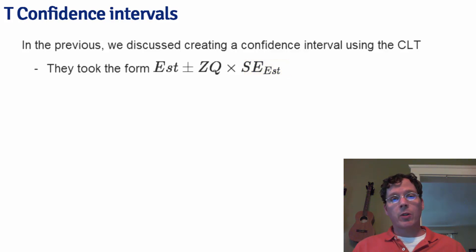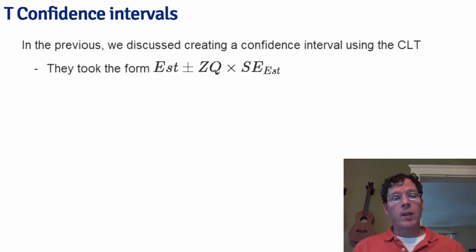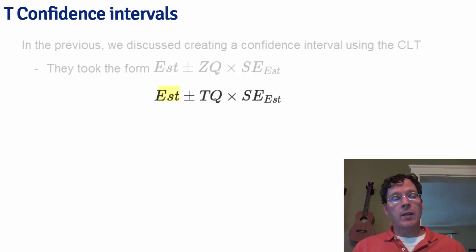In this lecture, we're going to discuss some methods for small samples. Notably, we're going to talk about Student or Gossett's t-distribution and t-confidence intervals. These intervals are going to be of the form estimate plus or minus a t-quantile times the standard error of the estimate.